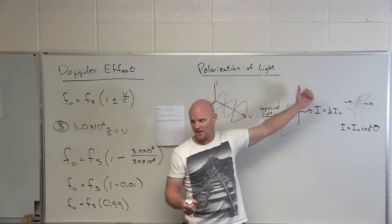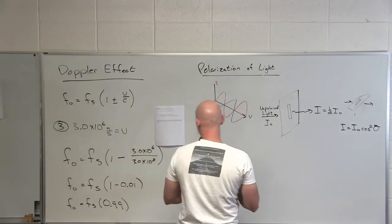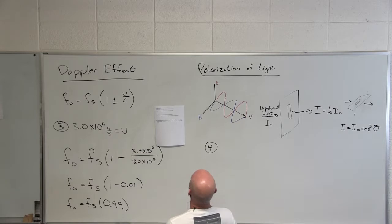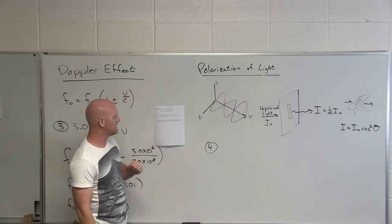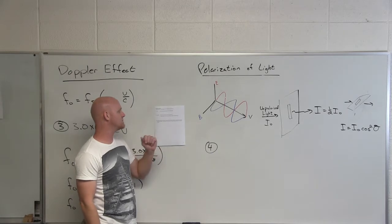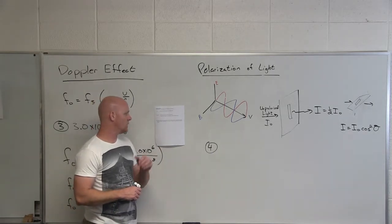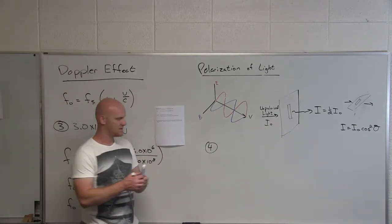It doesn't seem to make any sense, but it's evidence that light is indeed polarizable. If we look at the problem associated with this, we got number four. Number four says unpolarized light passes through a polarizing filter before passing through a second polarizing filter oriented 60 degrees from the first filter. What fraction of the intensity of the original unpolarized light passes through the second filter?